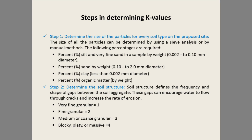The next step is to determine soil structure. Structure defines the frequency and shapes of the gaps between the soil aggregates. These gaps can encourage water to flow through cracks and increase the rate of erosion. For soils having very fine granular structure, the code is 1; fine granular is 2; medium or coarse granular is 3; and blocky, platy, or massive structure is given a value of 4.